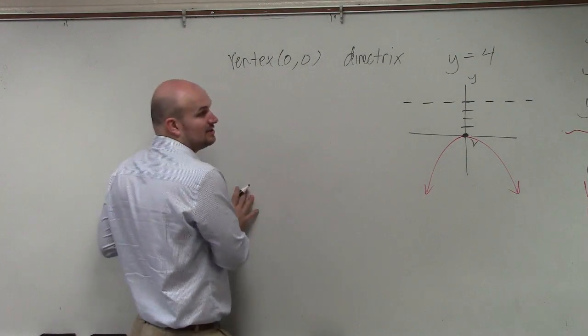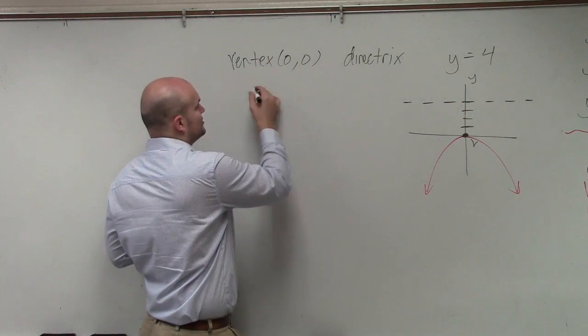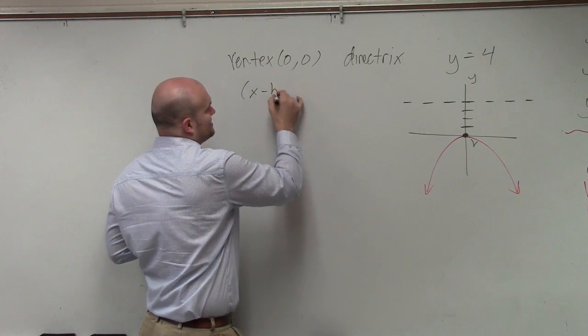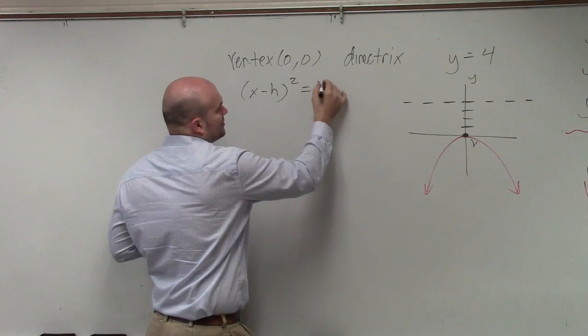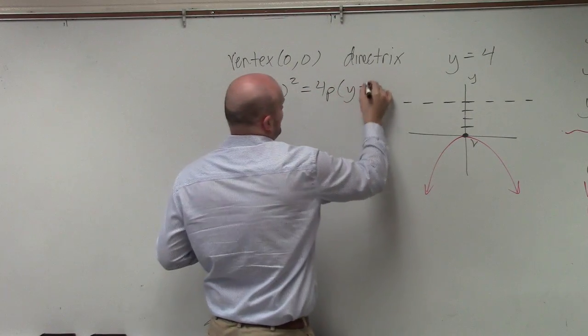So the formula that I'm going to use to write my equation is going to be (x minus h) squared equals 4p times (y minus k).